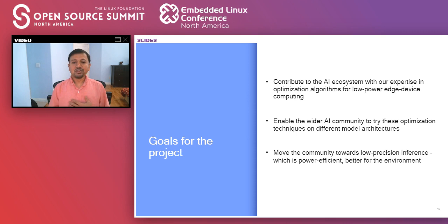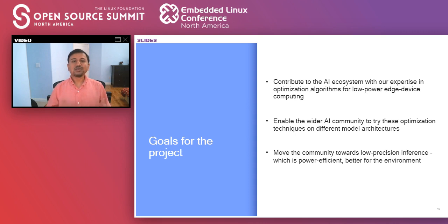There is a perception that models run well with 32-bit floats, maybe 16-bit floats is good enough, but going to 16-bit integers seems problematic, and 8-bit integers seem impossible. We want to remove that perception and make it easily possible for users to move towards integer inference.